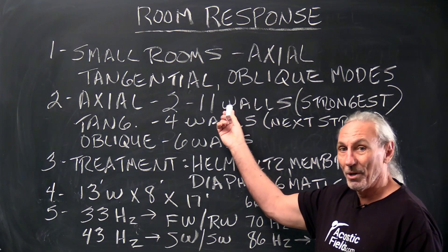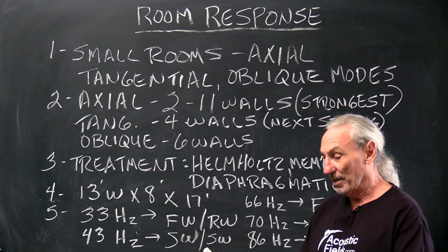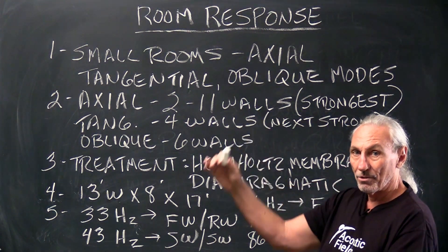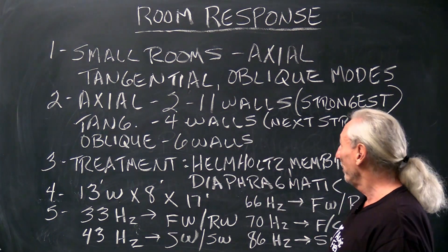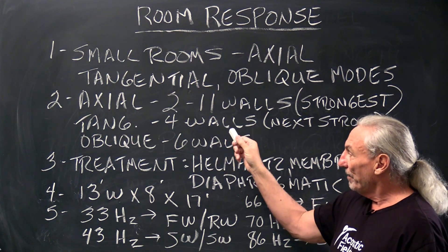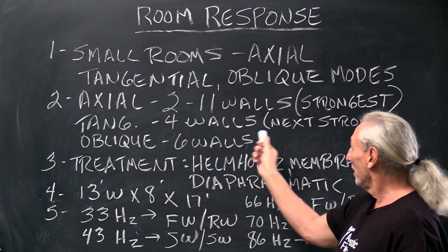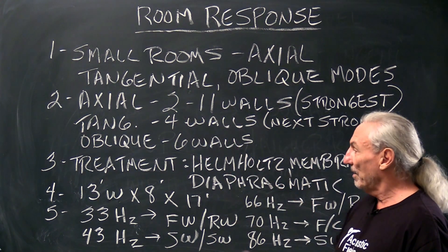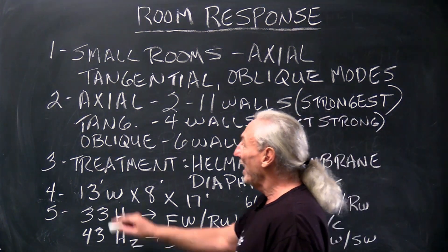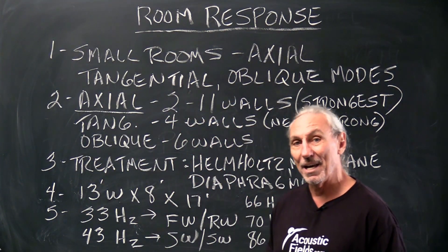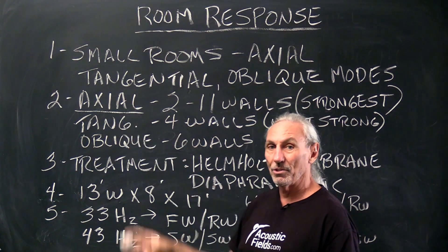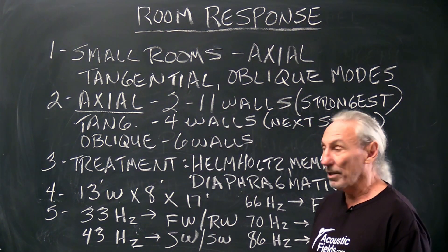Well axial we all know is between two parallel walls so it could be two side walls, could be a front and rear wall, could be floor to ceiling. So there's our axial definition and the axial modes are the strongest. They're the strongest of the three. They're almost twice as strong as tangential which is the next strongest and almost four times as strong as the oblique modes in our room. So anytime you're sitting in your room and listening and you don't like the low end performance of your room, it's probably an axial modal issue between two parallel walls.